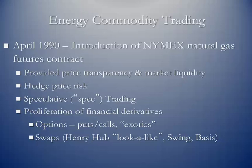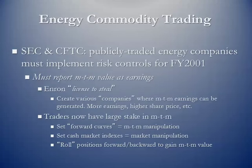In energy commodity trading, the natural gas contract was launched in April 1990 and the crude oil contract in 1983. These provided price transparency and market liquidity, allowing hedging of price risk but also adding instruments for speculative trading, leading to a proliferation of financial derivatives including puts and calls, exotic options, swing swaps, and basis swaps. The SEC and CFTC mandated that publicly traded energy companies implement a risk control program effective with their fiscal year for 2001.